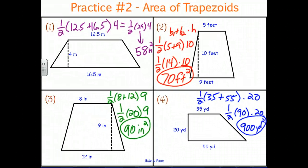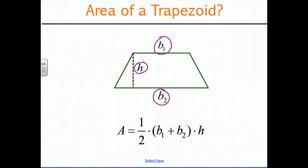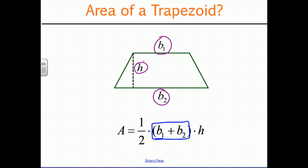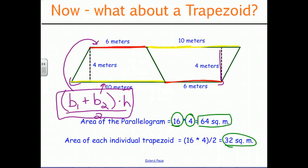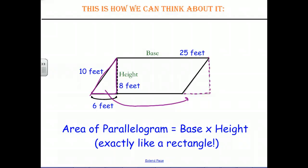So once again, the area of a trapezoid is just one half times the sum of the bases times the height, which we derived by making two trapezoids into a parallelogram. And the area of a parallelogram is just base times height, exactly like a rectangle.